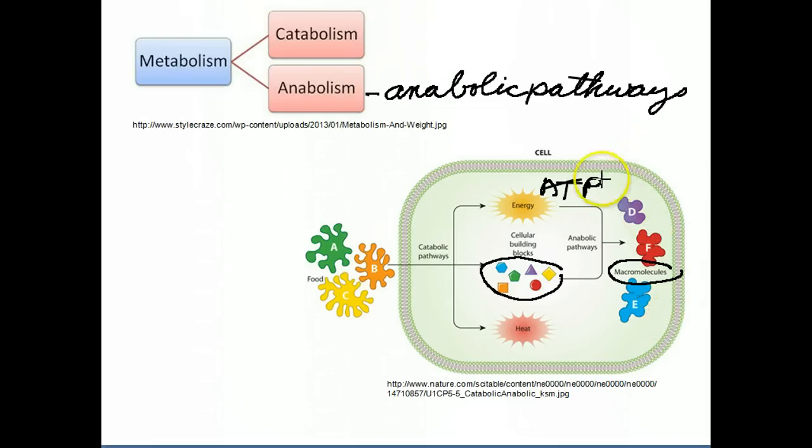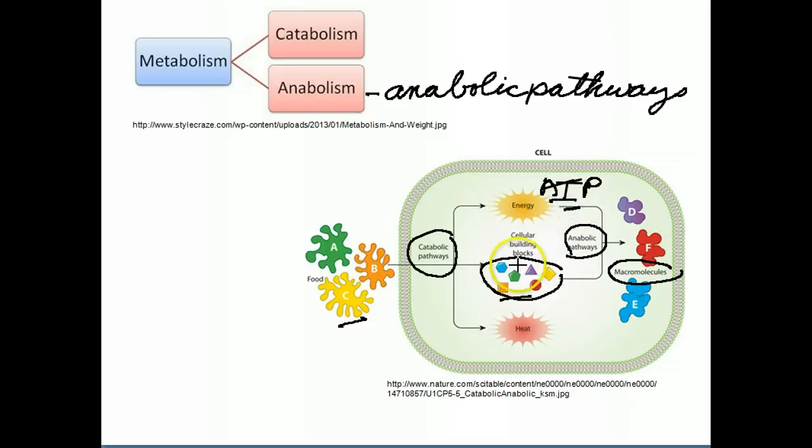So it's going to require energy that was provided by the catabolic pathways. So what I want you to remember is that catabolism breaks down large molecules and makes small molecules. In the process, they make ATP. Anabolic pathways take that energy, that ATP, along with the small molecules, and convert them into large molecules. So these catabolic pathways and anabolic pathways are somewhat intertwined.